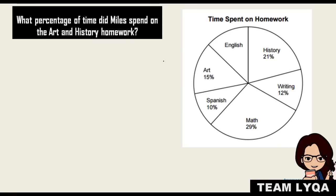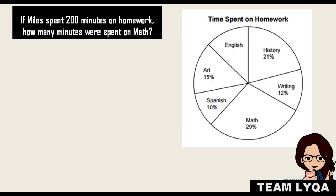Next question: what percentage of time did Miles spend on art and history homework? So what we're looking for is art and history. You have art at 15%, you have history at 21%. So the percentage of time spent combined, the answer to this would be 36%. Miles spent 36% of her time doing art and history homework.